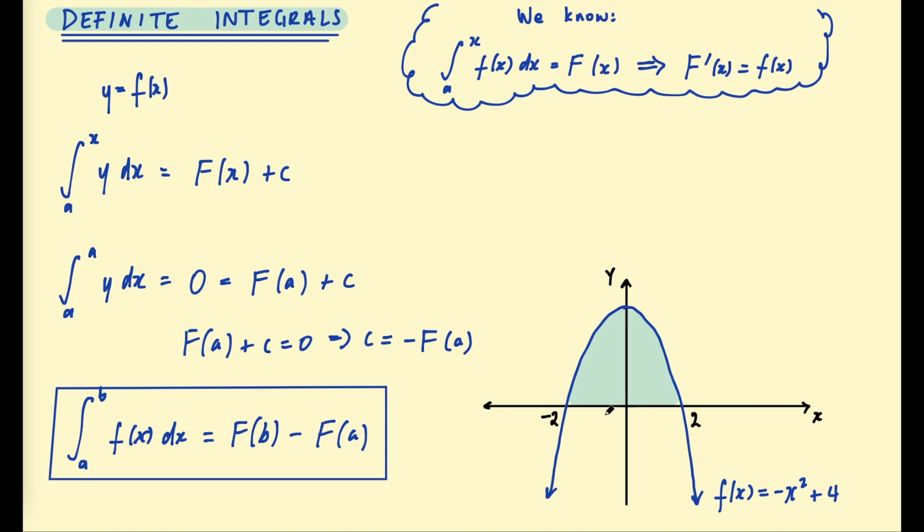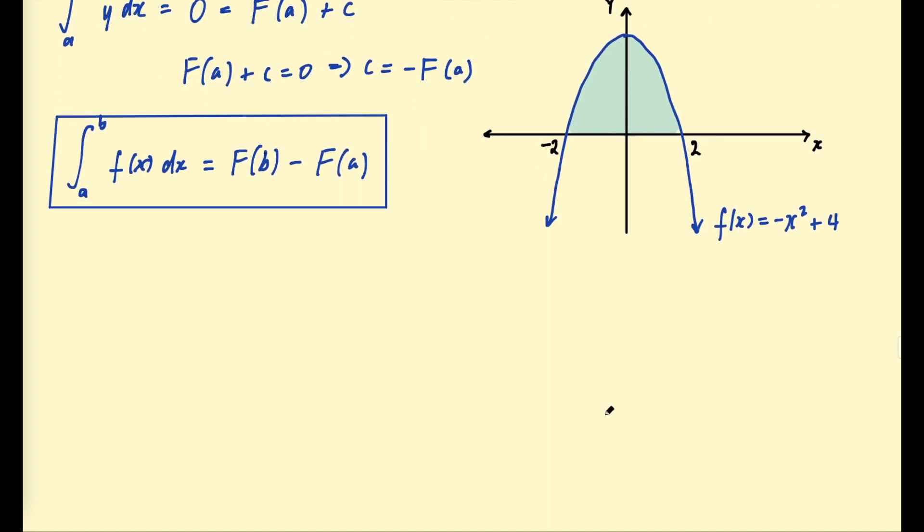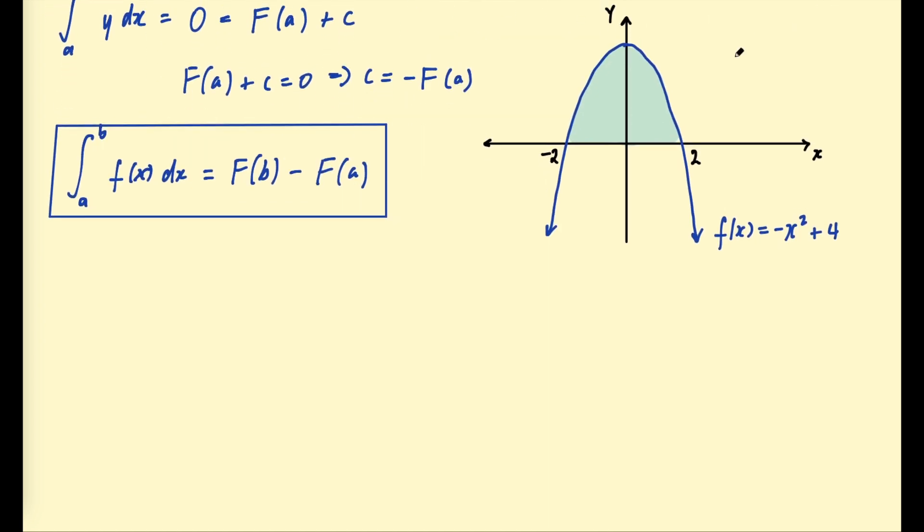Let's have a look at our example now using this idea. So we want the area from negative 2 to 2 under negative x squared plus 4. What does this process look like? Firstly we find the antiderivative of this function. So we add one to the exponent and divide by that exponent.